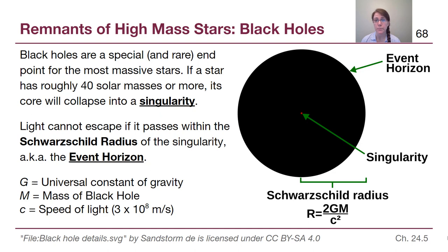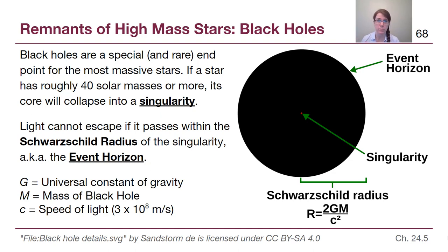The event horizon is a big sphere around the singularity, where that distance is determined by what's called the Schwarzschild radius. The Schwarzschild radius is the separation between the singularity, where the mass is, and the event horizon, where physics is able to act as normal. This Schwarzschild radius is based on the universal constant of gravity — the same one from the force of gravity equation in Chapter 3 — the mass of the black hole, and the speed of light. So the distance is based only on the mass of the black hole as a variable.